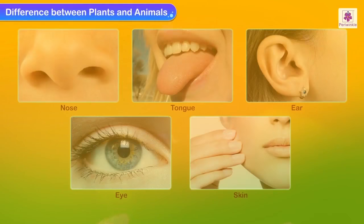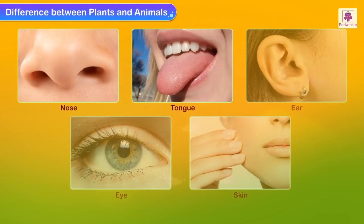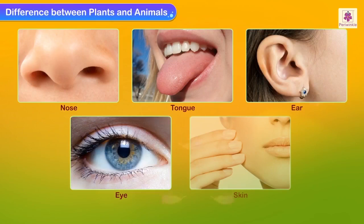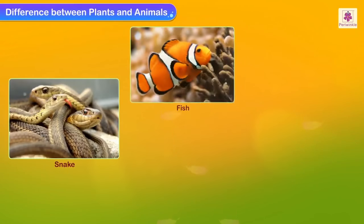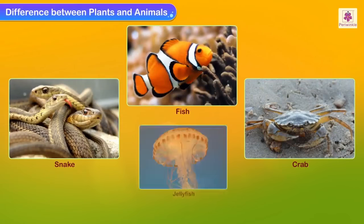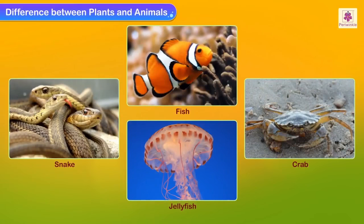Usually, animals have five sense organs: nose, tongue, ears, eyes, and skin. Some animals may lack one or two of these sense organs.